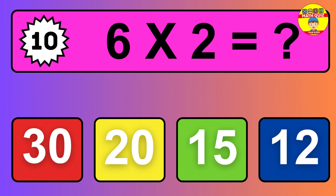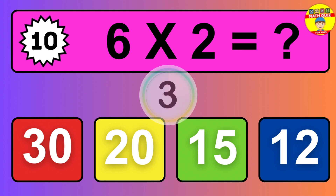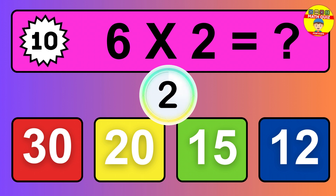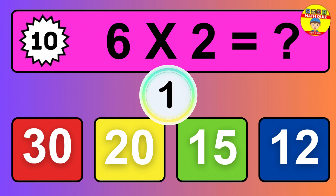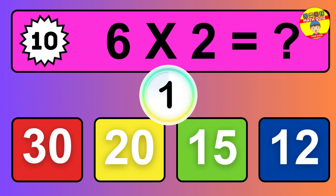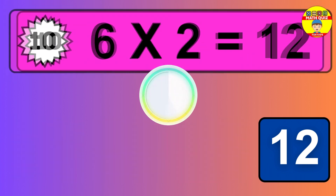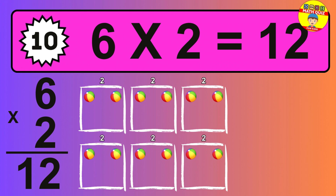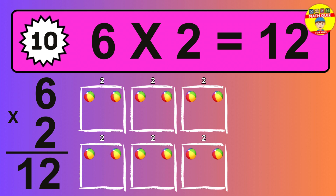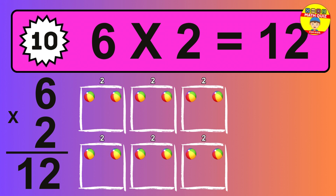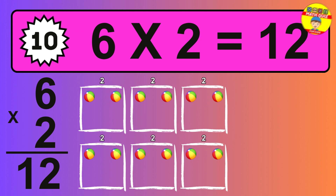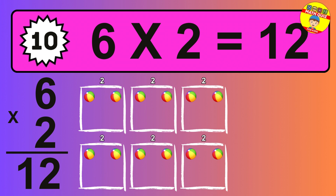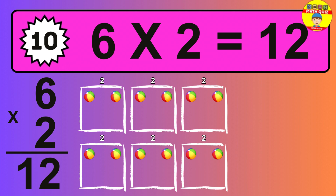Question ten. Six times two equals what? So the answer is six times two is twelve. To calculate, we have six groups with two balls each one. So how many balls do we have? Twelve balls.